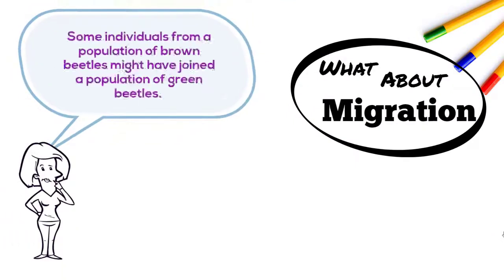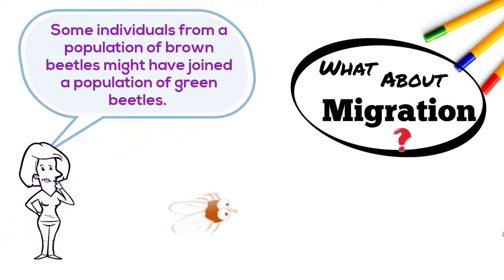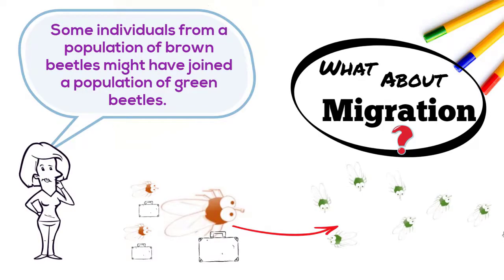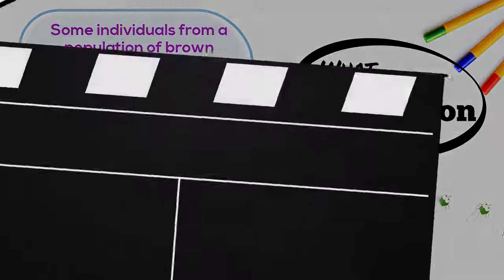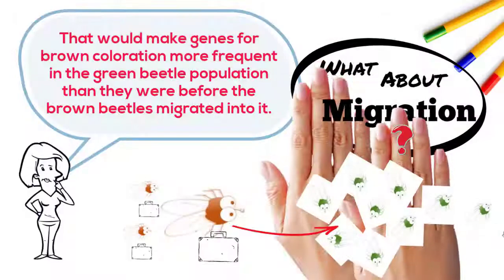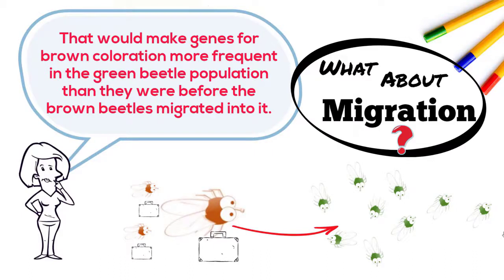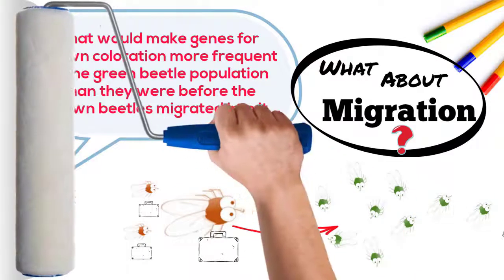What about migration? Some individuals from a population of brown beetles might have joined a population of green beetles. That would make the genes for brown coloration more frequent in the green beetle population than they were before the brown beetles migrated into it.